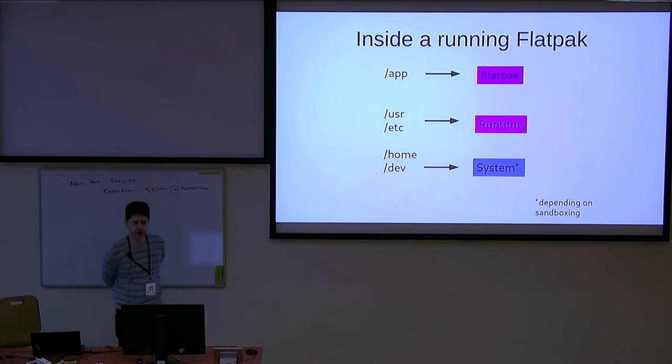Reviewing what a Flatpak looks like: when a Flatpak's running, it has its own file system namespace. There are a couple different directories that come from different sources. The /app directory is where you have the application itself and any libraries that are bundled. The /usr and /etc, on the other hand, come from the runtime, the set of shared libraries. Then you might have other directories like /home or /dev which can come from the running system, depending on what kind of sandboxing you have set up.